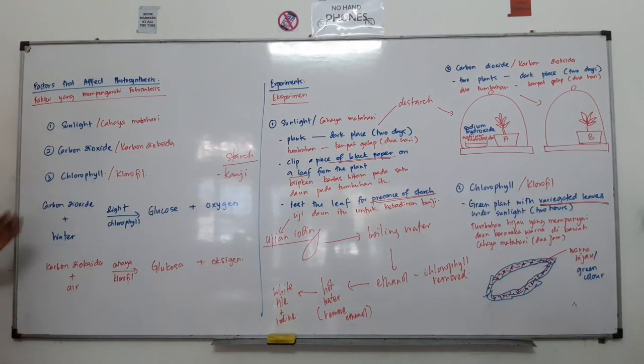Overall, these are the three factors affecting photosynthesis: sunlight, carbon dioxide, and chlorophyll. I hope this session has been useful for all of you. Good day, thank you.